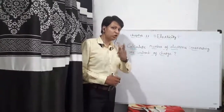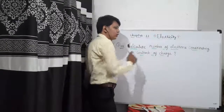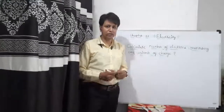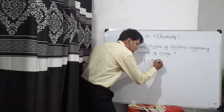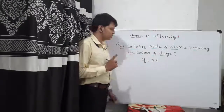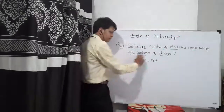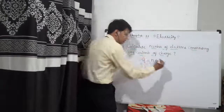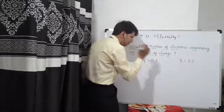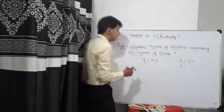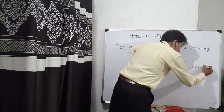Friends, let us solve one question: calculate the number of electrons constituting one coulomb of charge. Previously I showed you the equation to find charge on n number of electrons, but now we are going to find out the number of electrons for one coulomb of charge. As per the question, the charge Q is one coulomb, and the value of E is 1.6 into 10 to the power minus 19 coulomb.